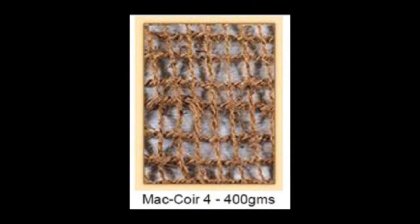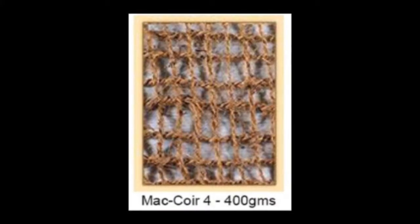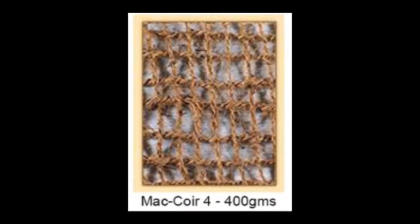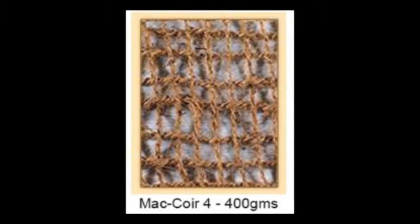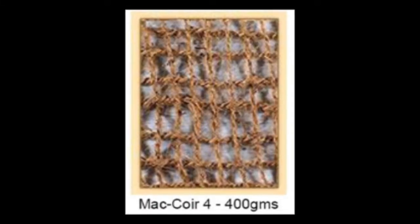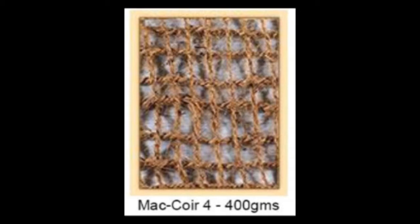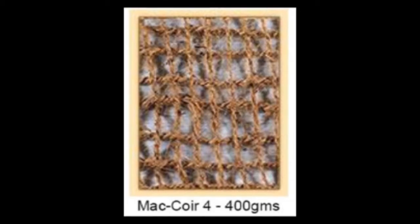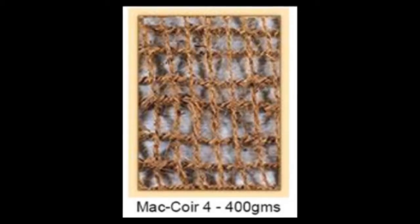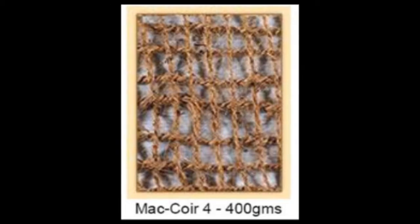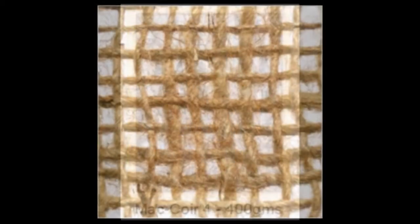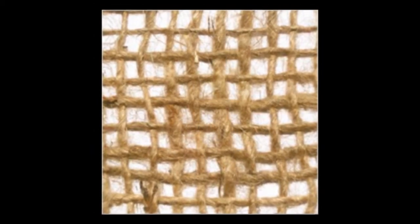Different fibres will have different properties in terms of durability and performance in given climates. For example, coconut fibre is quite durable in tropical conditions whereas jute fibre is very good for revegetation works. Jute fibre is used in this example. The manufacturing technique is the same.